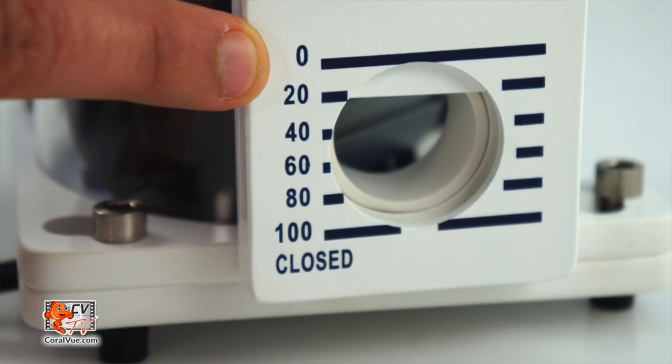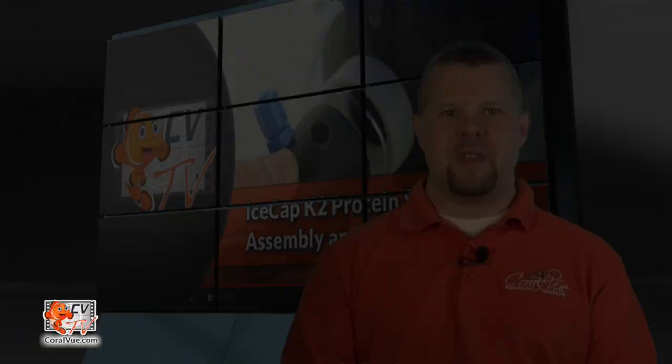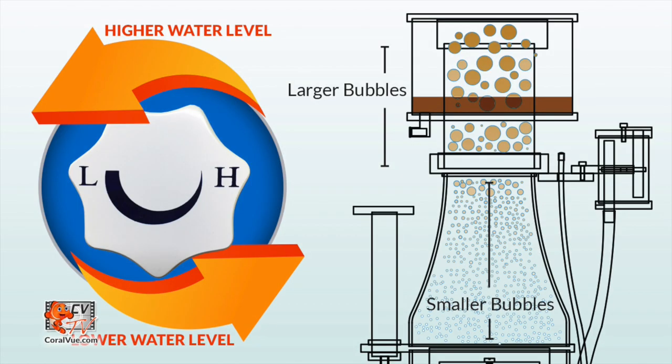With the output valve completely open, plug the pump's power plug into the electrical socket. To tune the skimmer to your aquarium, simply close the output valve by turning the handle counter-clockwise until you retain pea-sized bubbles at the point where the collection cup mounts to the skimmer body.